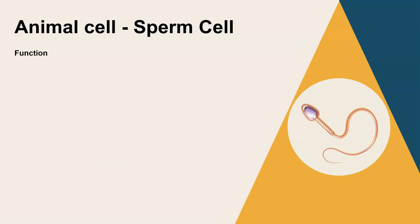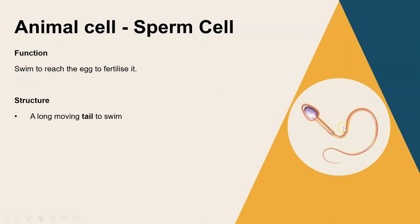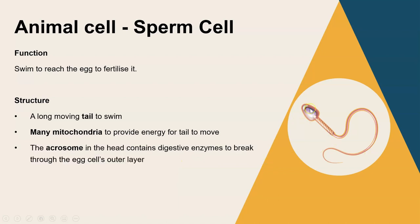Now let's go through the different specialized cells you need to know. Starting with animal cells - firstly a sperm cell. For all specialized cells you need to know what the function is and how the structure links to that. The function of the sperm cell is to swim to reach the egg, carry the genetic material, and fertilize that egg. The structures include a long tail that whips back and forth so it can swim and move towards the egg cell.